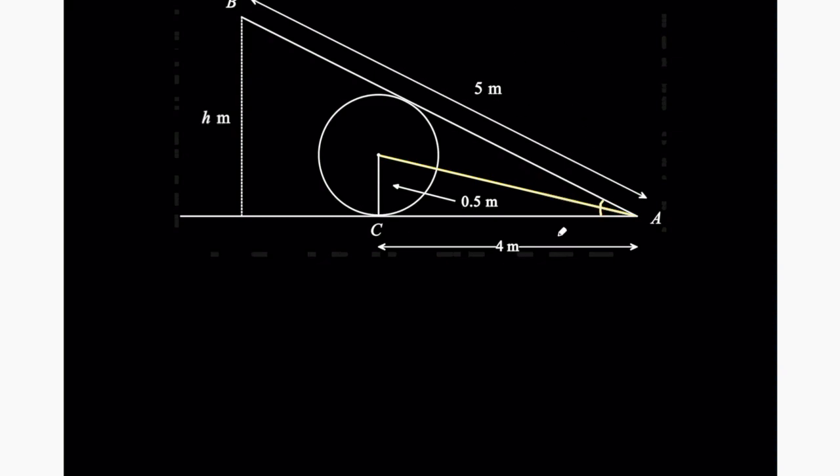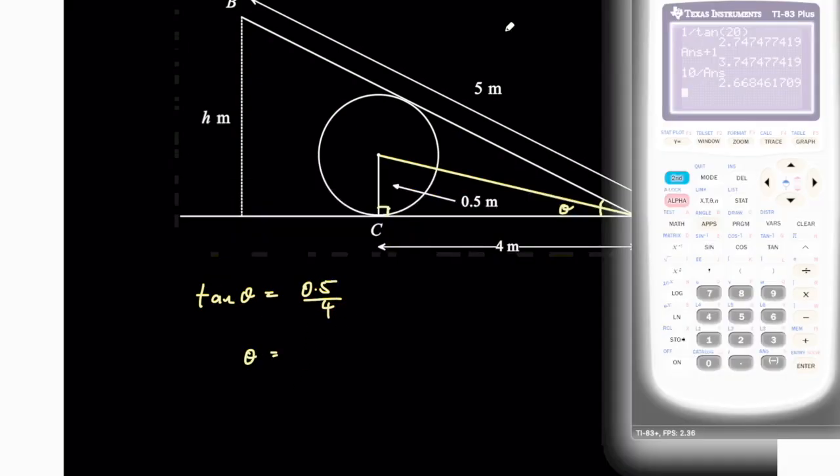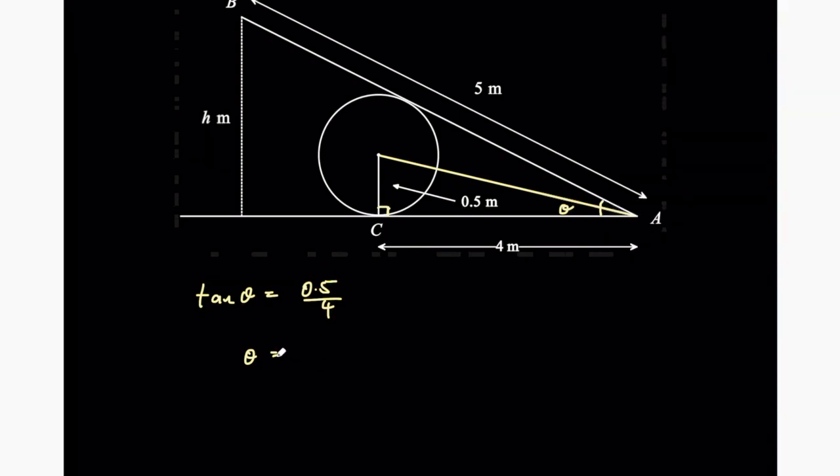I can find this angle because I have 2 lengths of this right angle triangle. I know it's a right angle triangle again because this is the radius meeting of the tangent at 90 degrees. So I can use the tan ratio again. Tan of theta equals the opposite side over the adjacent side. This allows me to find theta by using arc tan or inverse tan. So I can do the inverse tan of 0.5 on 4. And I get 7.125 approximately. So then 2 theta is going to be double this.